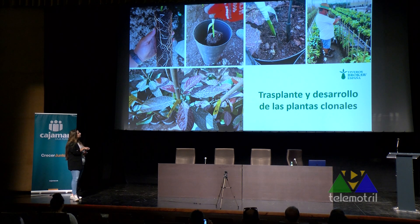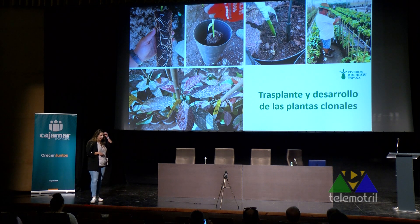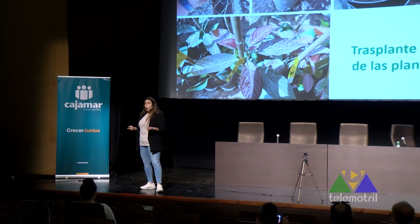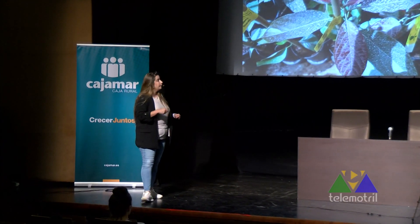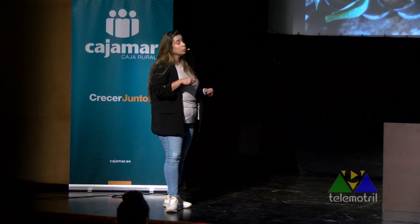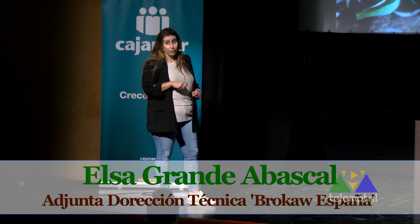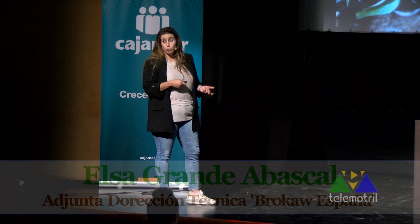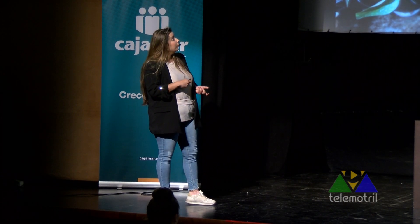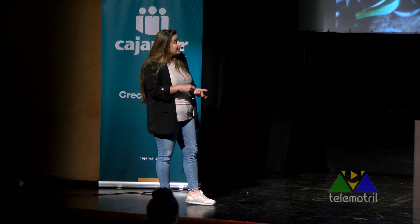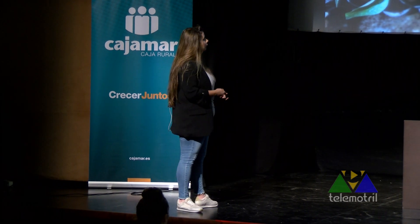Voy a hacer especial hincapié en el tema del gotero. Nos hemos dado cuenta que hay muchos agricultores que ponen dos goteros a los lados del tronco o goteros interlínea. Es imprescindible poner al principio de la plantación un gotero justo, cerca del tronco, porque en el vivero el sistema radicular lo tenemos concentrado en el cepellón. Si ponemos un gotero a cada lado, aunque superficialmente el bulbo se expanda un poco, las raíces que están en el centro no se van a hidratar.